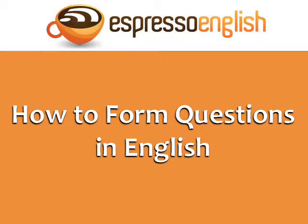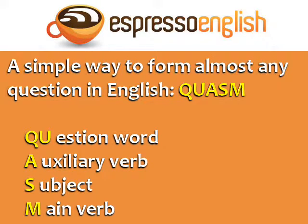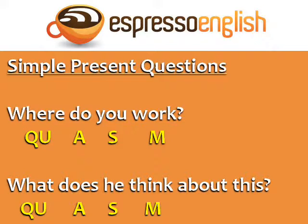How to form questions in English, from Espresso English. Many students get confused with the word order in questions, but there's a simple way to form almost any question in English. Just follow this formula: question word, auxiliary verb, subject, main verb. This formula can be used for many tenses. Let's look at some examples.